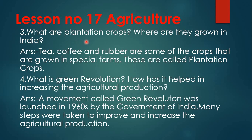Third question: what are plantation crops and where are they grown in India? Tea, coffee and rubber are some of the crops that are grown in special farms. These are called plantation crops.